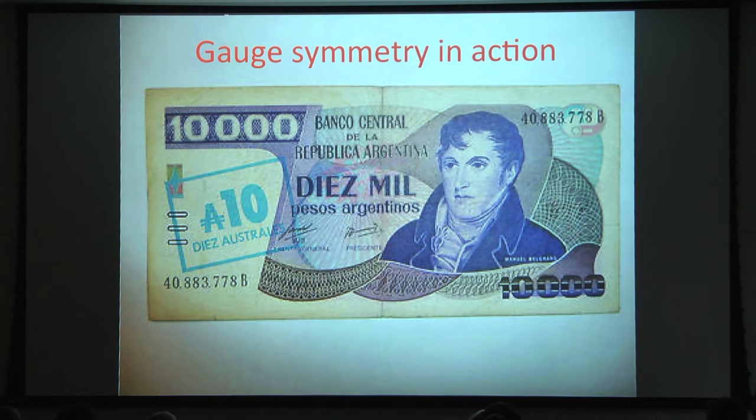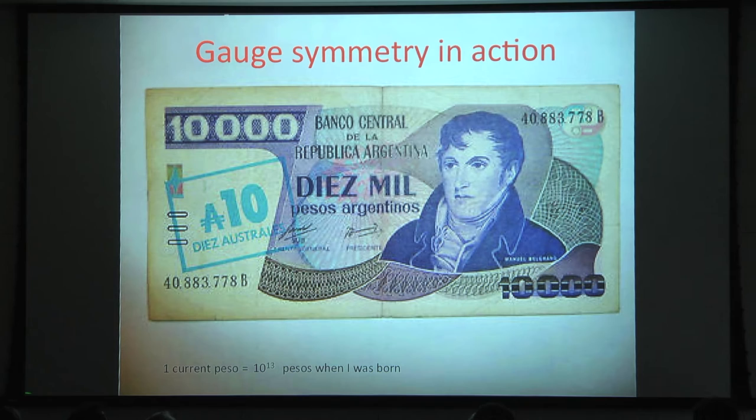This type of gauge symmetry arises in the real world usually in countries with high inflation — you remove a few zeros in your currency. Here's a change of gauge symmetry where you drop three zeros; they had to do it quickly so they just printed it on the same banknotes. Nothing really changes. I know that one current peso is equal to 10^13 of the ones when I was born in Argentina — that happened many times, and I assure you nothing really happens when you do this process.